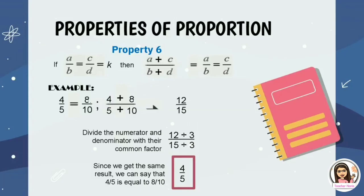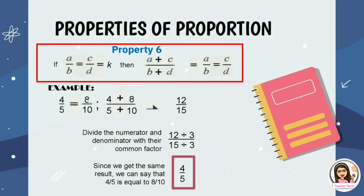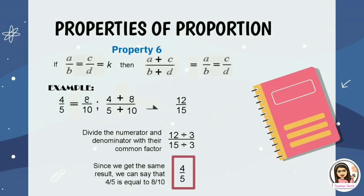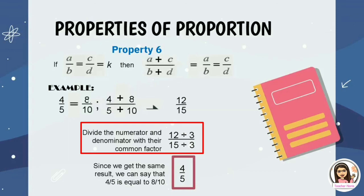Lastly, Property 6: if a over b equals c over d equals k, then a plus c over b plus d equals a over b equals c over d. For example, 4 over 5 equals 8 over 10. Adding numerators and denominators gives 4 plus 8 over 5 plus 10, which equals 12 over 15. Dividing numerator and denominator by their common factor 3: 12 divided by 3 over 15 divided by 3 equals 4 over 5. Since we get the same result, 4 over 5 equals 8 over 10 is confirmed.